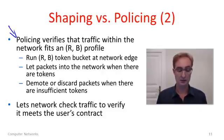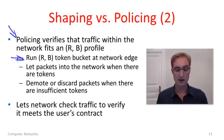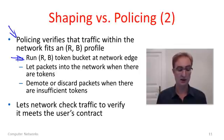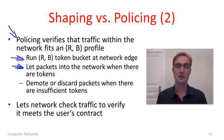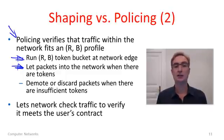At a network edge device — this might be a router inside the network — we run the RB token bucket. As traffic comes through, we meter or charge that traffic by taking tokens out of the token bucket that corresponds to the traffic.